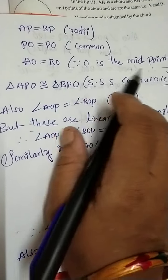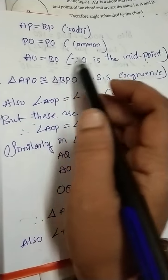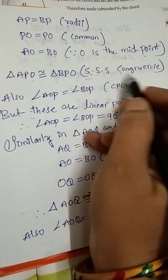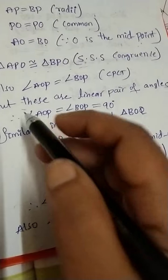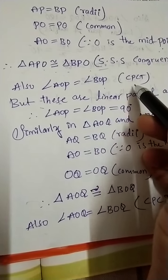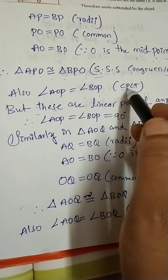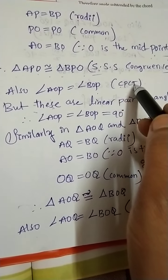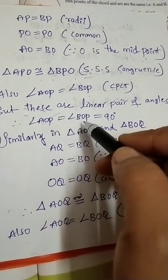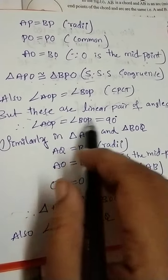So AO equals BO because O is the midpoint. We have three sides equal: AP = BP, OP = OP (common side), and AO = BO. Therefore triangle AOP is congruent to triangle BOP by SSS congruency. Also, angle AOP equals angle BOP by the CPCT rule. But these are a linear pair, so angle AOP plus angle BOP equals 180 degrees, meaning each is 90 degrees.